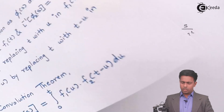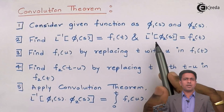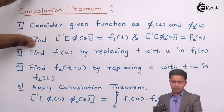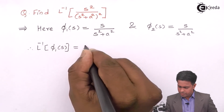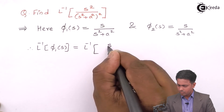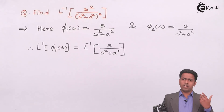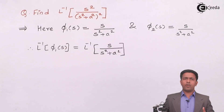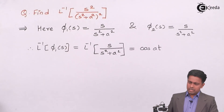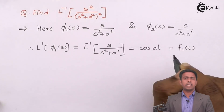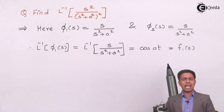In step number 2, we have to find out the inverse Laplace transform of φ₁(s), which will be called f₁(t), and the inverse Laplace transform of φ₂(s), which will be called f₂(t). The inverse Laplace transform of φ₁(s) = s/(s² + a²) is cos(at). I can call this f₁(t). Since φ₂(s) is exactly the same function, we get the same answer and call that value f₂(t).